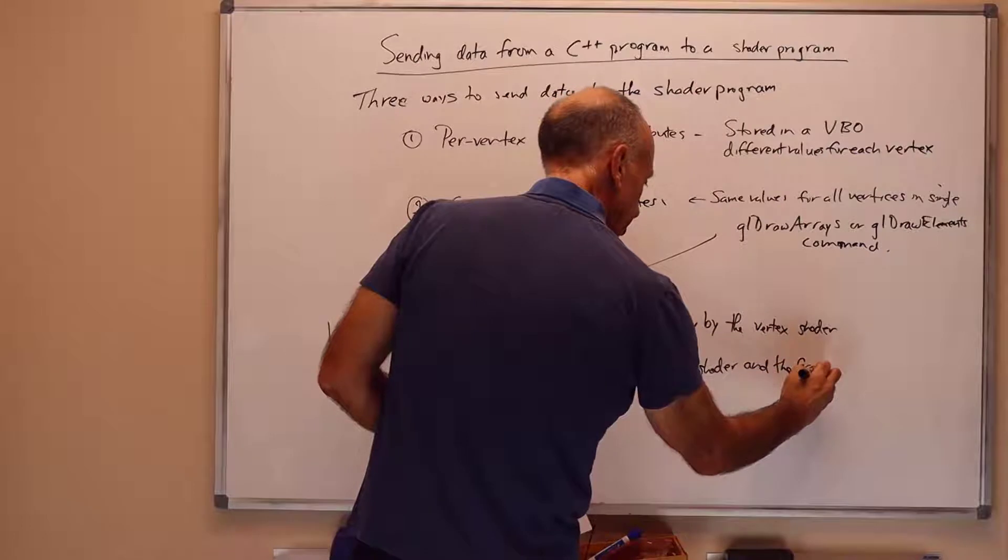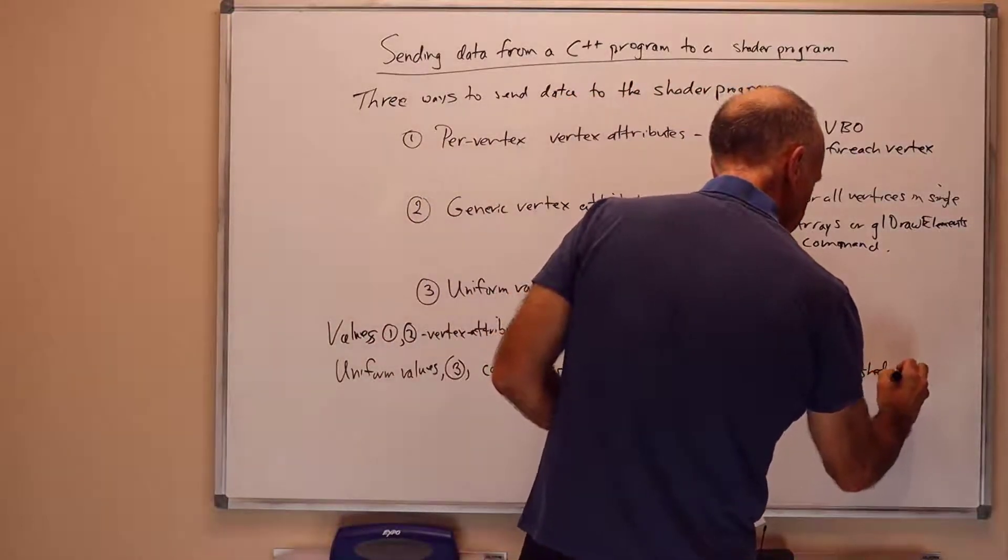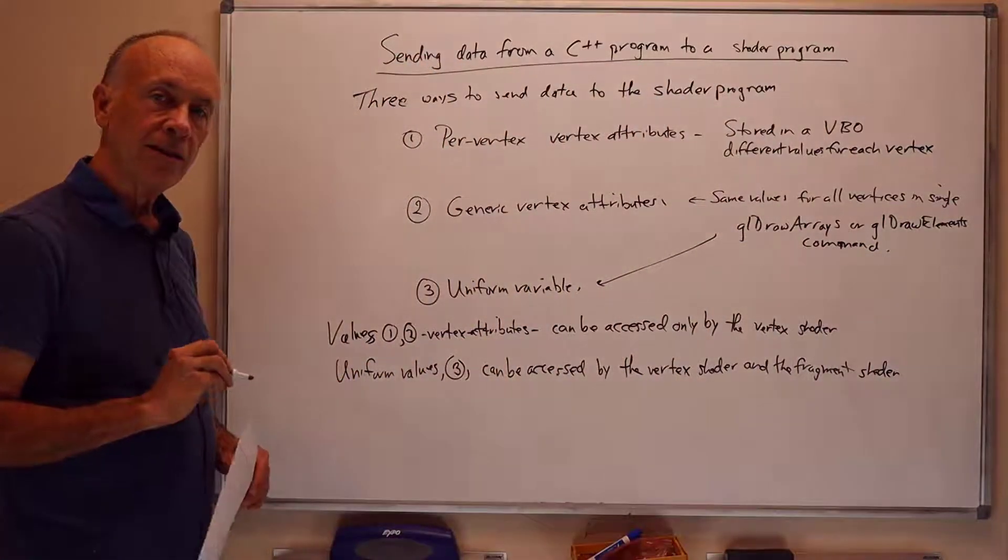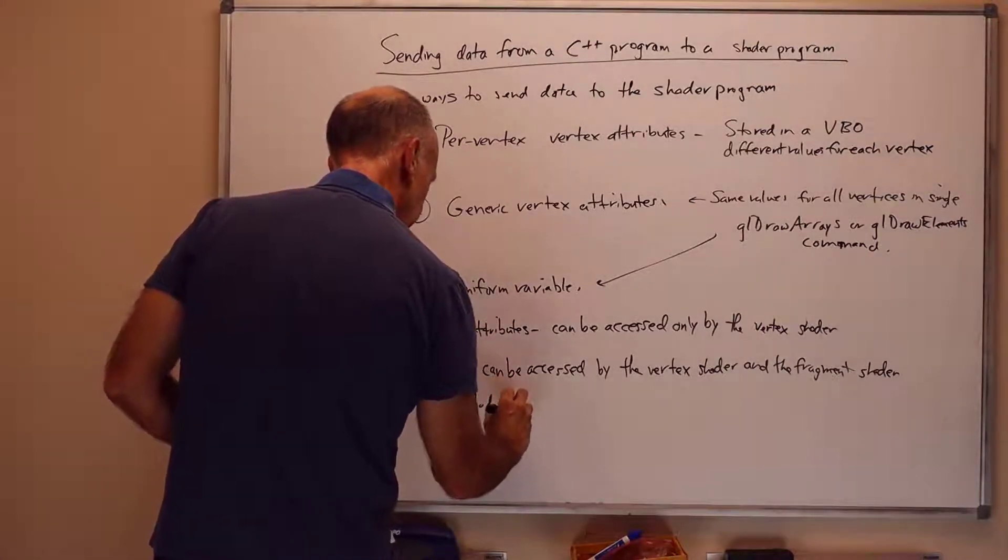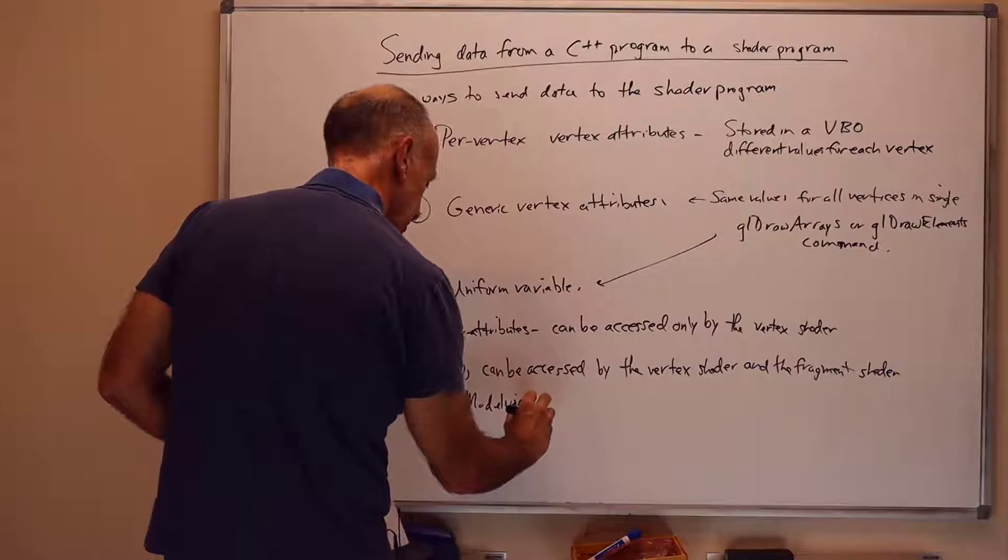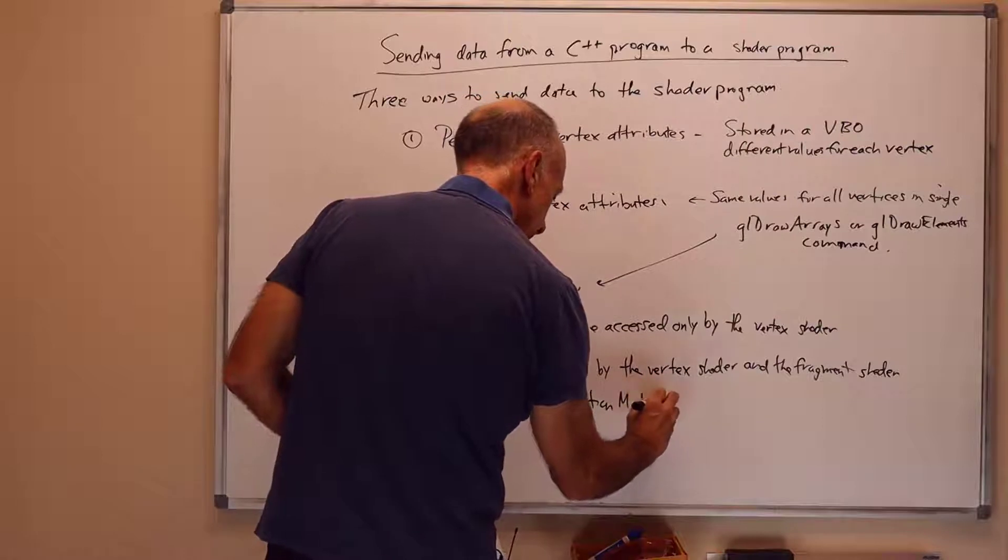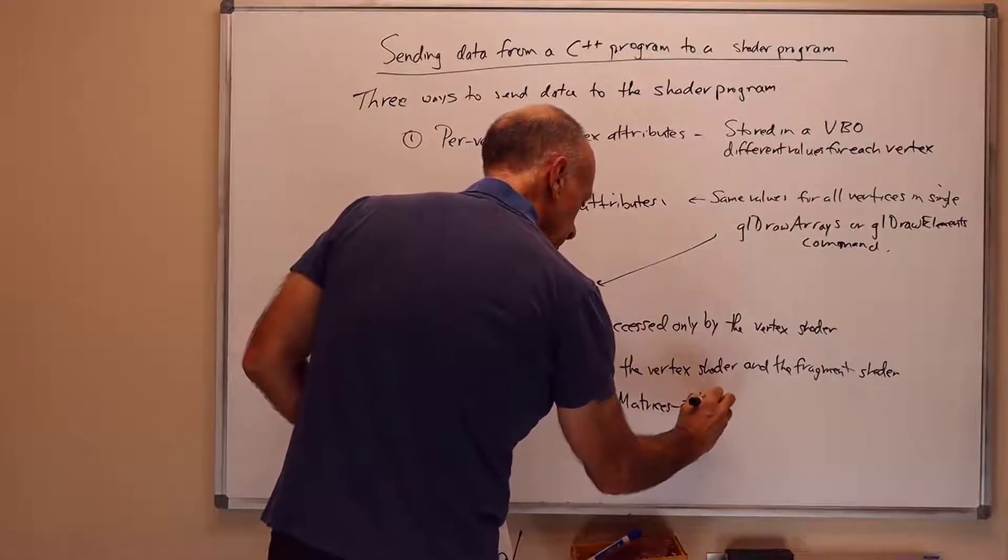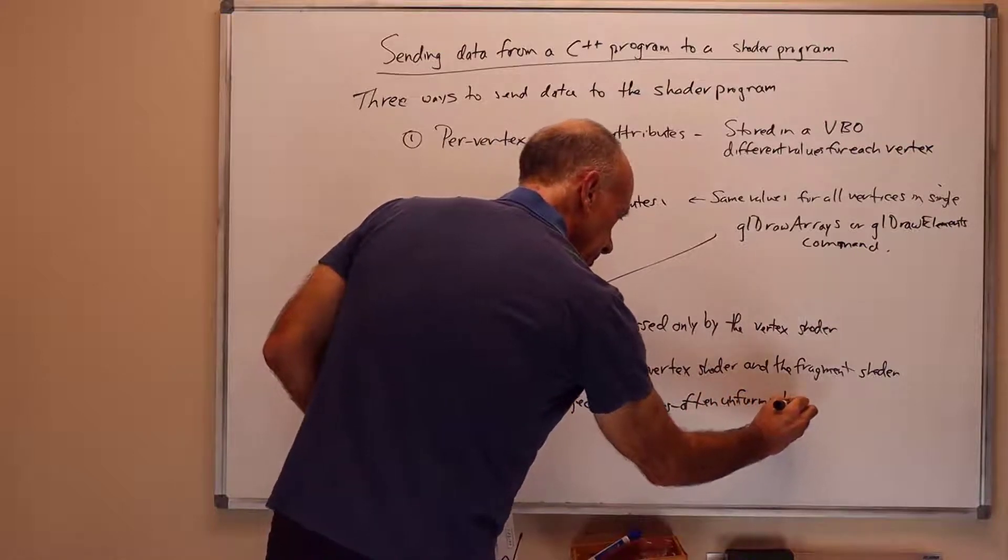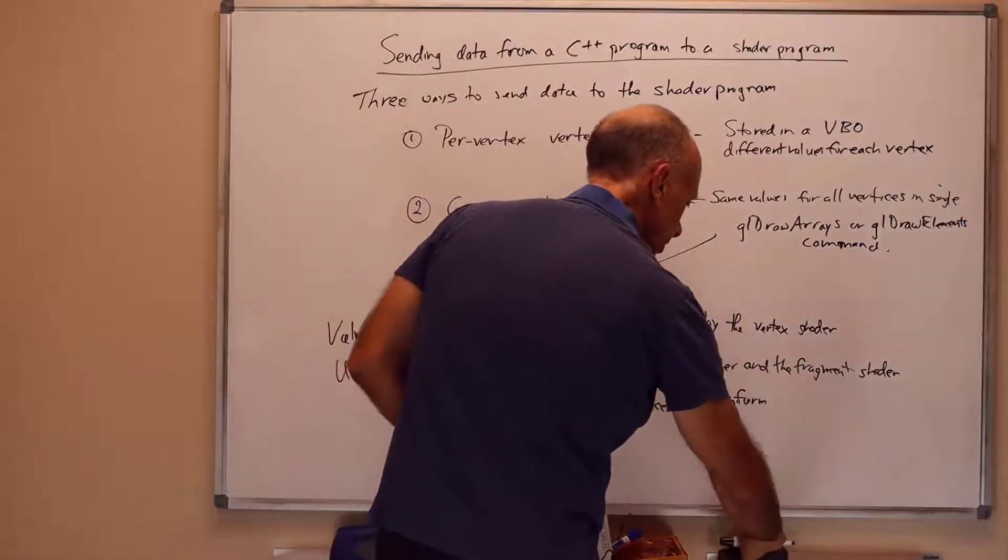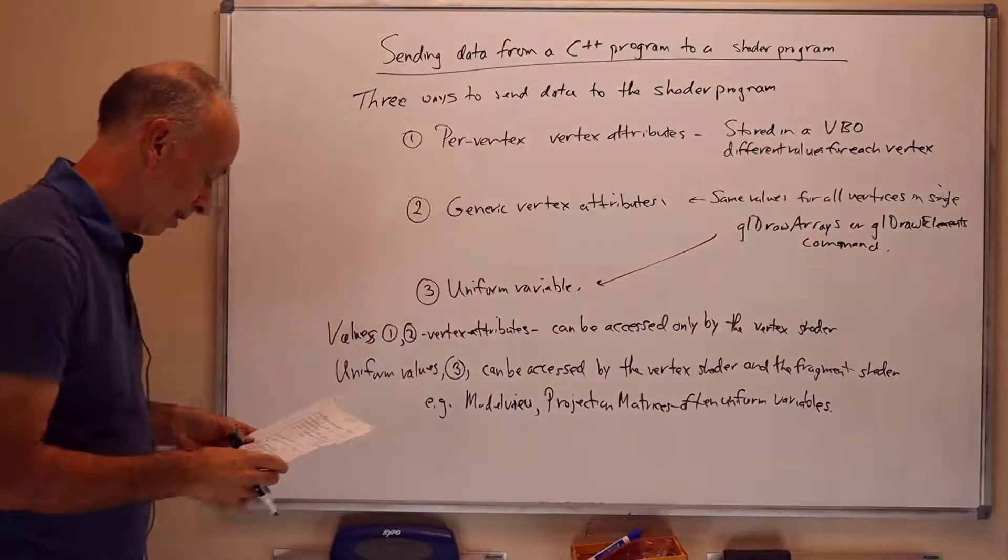On the other hand, uniform values, these are the things of type 3, these can be accessed by both the vertex shader and the fragment shader. So it's traditional to use things like model matrix and projection matrix, are often made available as uniform variables, e.g. the model view matrix or the projection matrix. We will talk more about these as we get into it, are often uniform values. Because sometimes the fragment shader actually wants to use these matrices for transformations, such as when we get on lighting and so on.